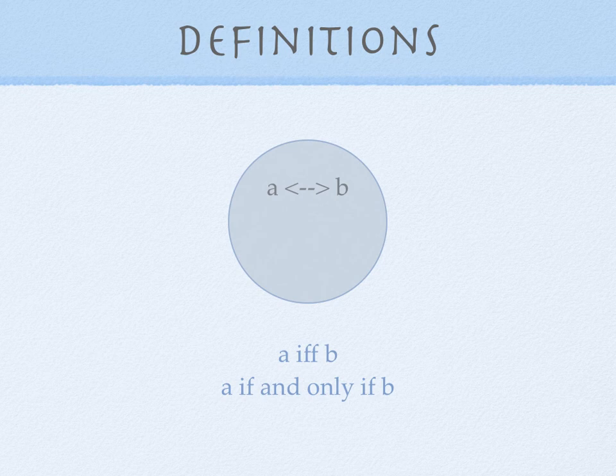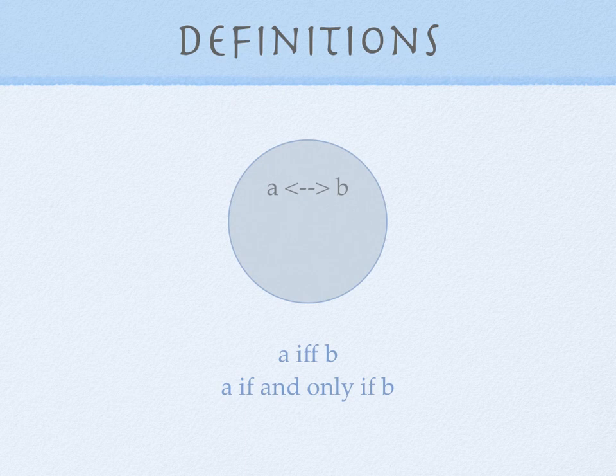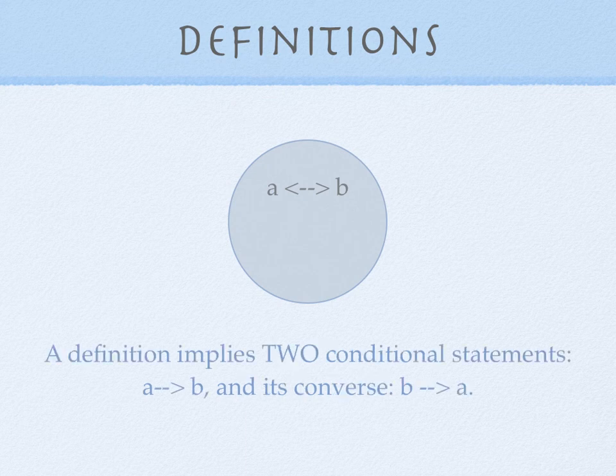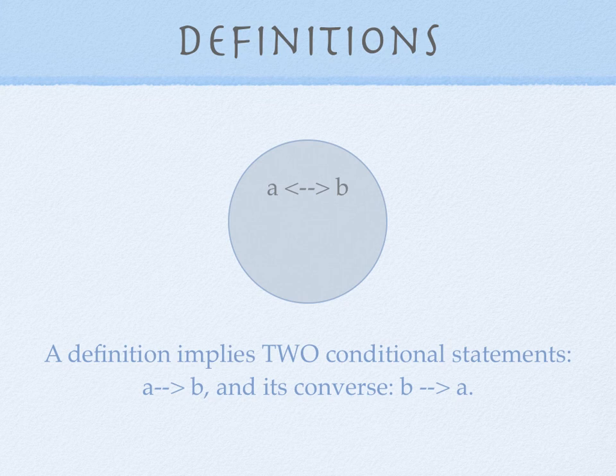So a definition can be written as this if and only if that, A if and only if B. And it implies two conditional statements: A implies B, and B implies A. Now normally a conditional statement and its converse are not logically equivalent. But if we have a definition and it's for real, then both the statement and its converse are true.